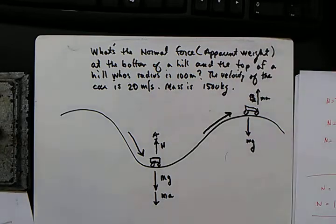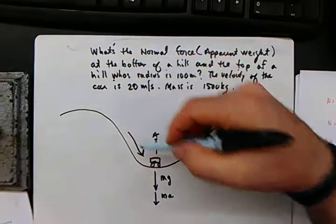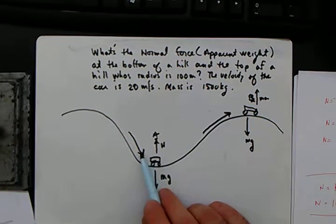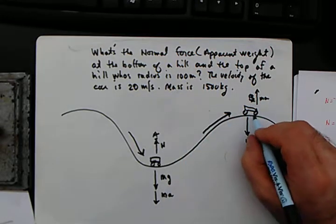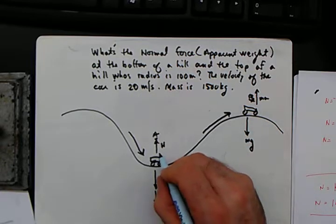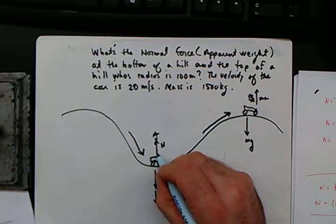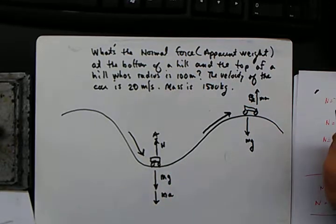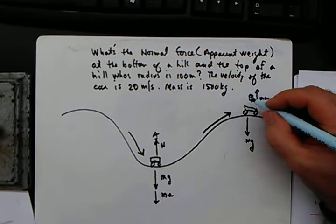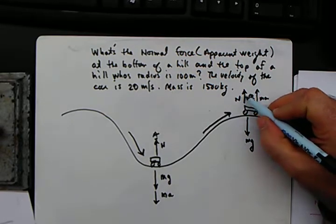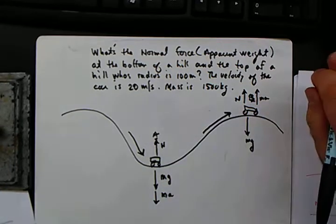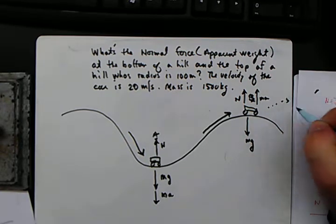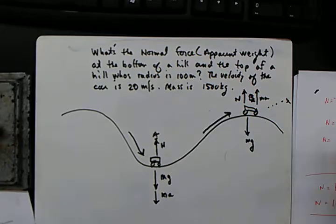When driving in a car going down a hill, at the bottom you're going against the road, so it's going to seem like you weigh more. As you go up, it's going to seem like you weigh less. The normal force pushing up from the road through the tires will be greater at the bottom and less at the top. In fact, if you go fast enough, you could actually fly off the hill tangentially.